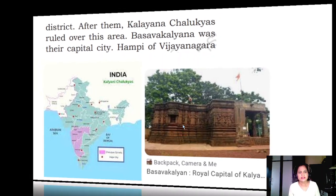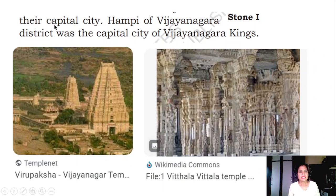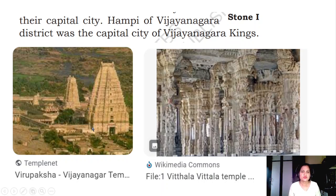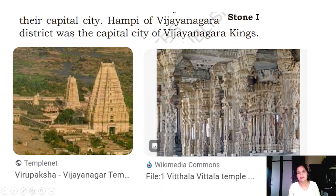Hampi of Vijayanagar district was the capital city of the Vijayanagar kingdom. If you go to Hampi, you can see it is a very big city with a river flowing through the middle - a very beautiful city with so many monuments. It takes almost two or three days to see the whole city. Now it is more like a village, but the monuments are still there. The Virupaksha temple in Hampi is part of the Vijayanagar empire.